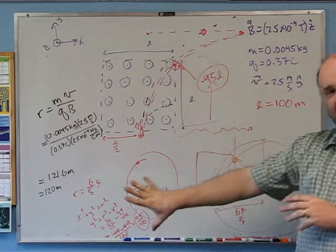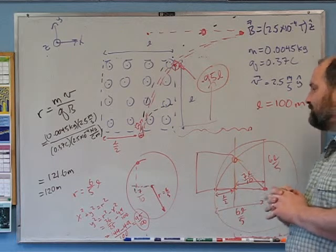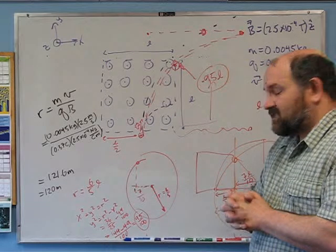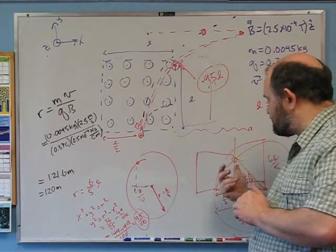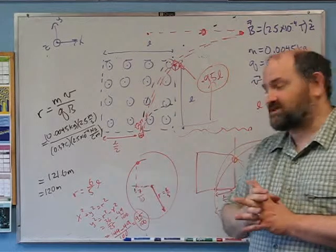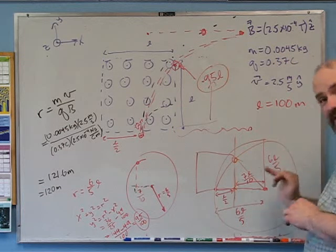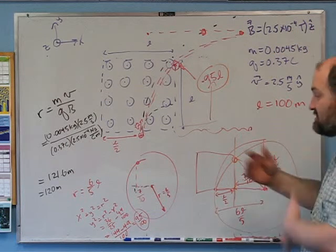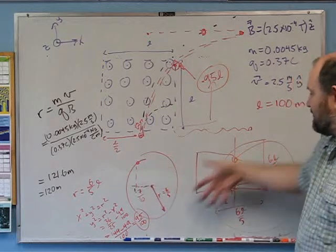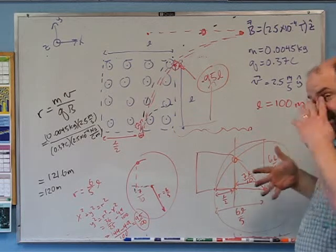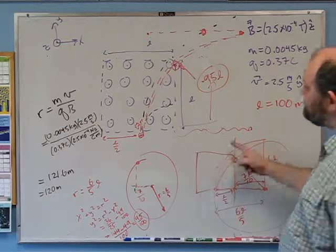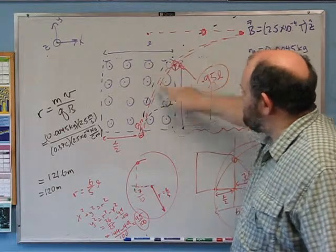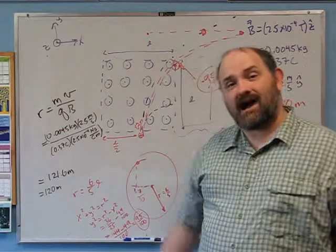If you got lost at the end, I recommend thinking it through — this is ultimately tenth-grade math: x² + y² = r². You can answer questions like where does a line intersect a circle just by knowing that and working carefully. There's no formula for where a square intersects a circle that you can just look up. The physics ended once I knew the direction and radius of the circle; figuring out if it exits the right or top required all this geometry.